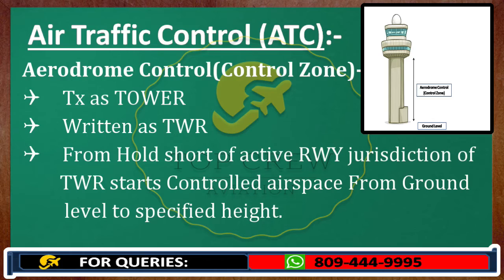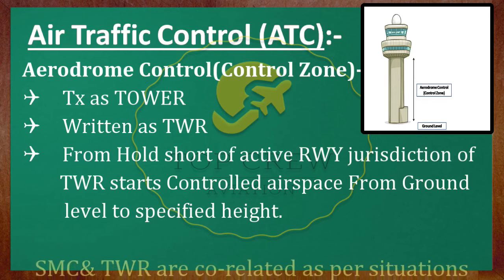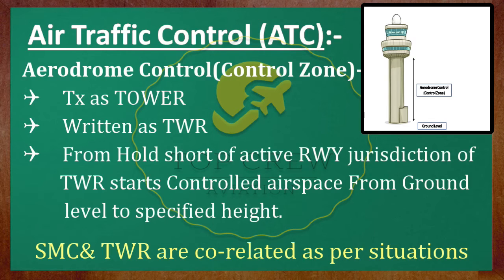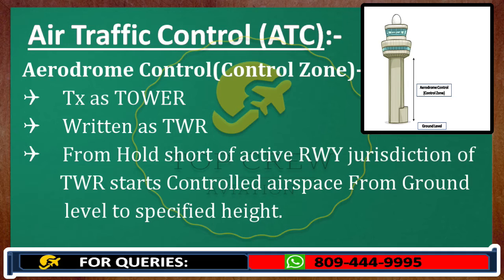At some airports there may not be any surface movement control. At those airports, tower would take both responsibilities. So SMC and tower are correlated as per the situation. For example, at the international aerodrome where I trained for my CPL, there was just tower. But at Delhi or Mumbai, you do have separate ATCs. Wherever movement is limited, one person can handle both responsibilities; otherwise, responsibilities are assigned to individual ATCs. SMC and tower are correlated as per the situation, but approach and control are defined.